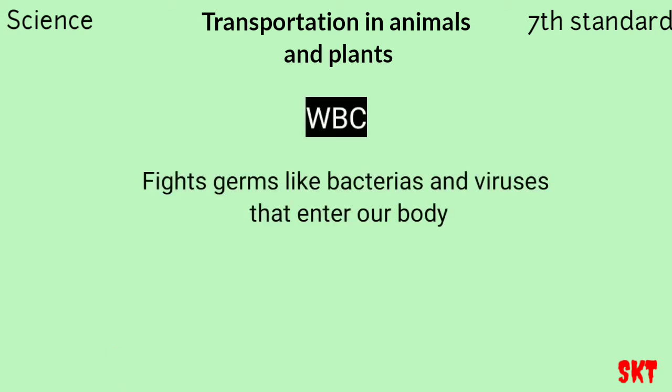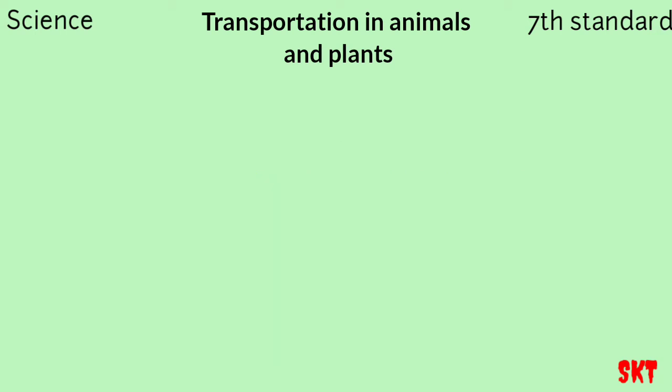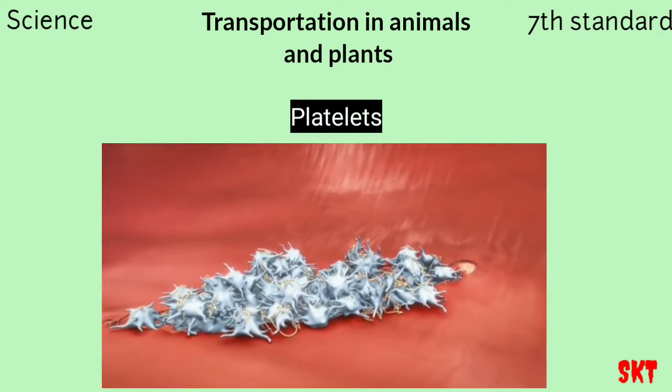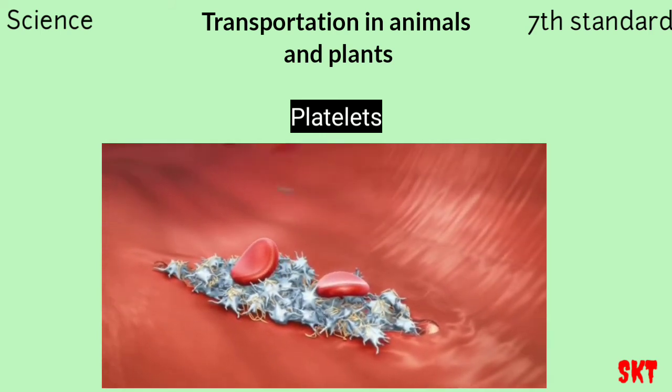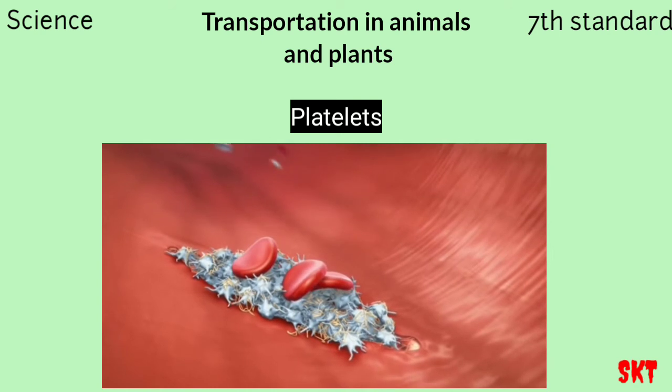Our blood also contains white blood cells (WBCs), which fight against germs that may enter our body. When bacteria and viruses enter our body, our immunity — with the help of WBCs — fights against them. Have you ever wondered why blood stops flowing after some time when there is an injury or cut? It's because our blood contains another type of cell called platelets, which form a clot at the injured place and stop the flow of blood.